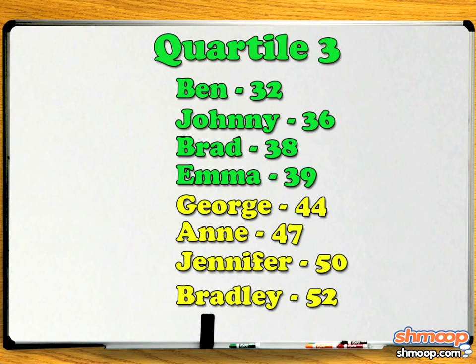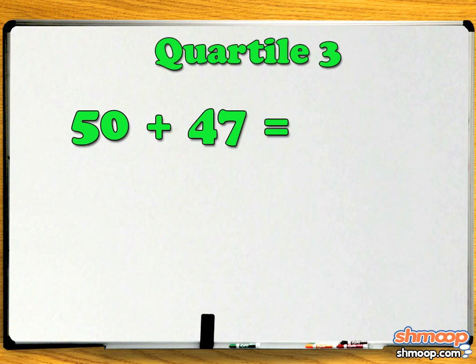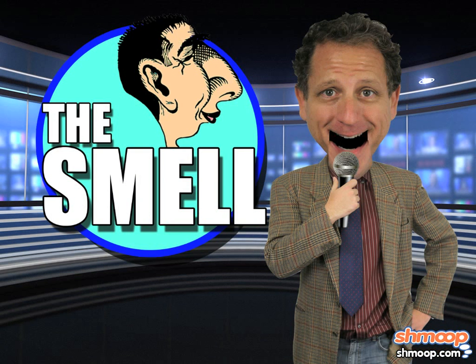Now do the same for the upper quartile, or Quartile 3. 50 plus 47 equals 97, and 97 divided by 2 equals 48.5. Quartile 3 is 48.5.